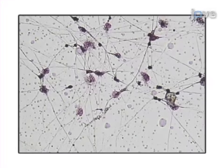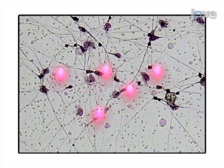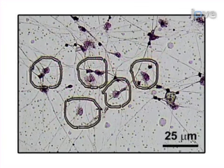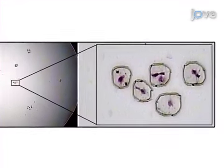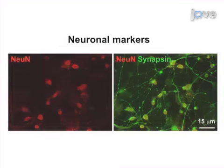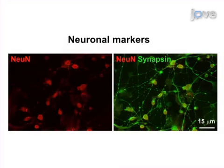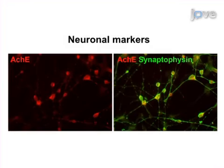Next, immunofluorescent staining for neuronal markers is performed to determine the fate of the differentiated neuro progenitor cells. Finally, laser capture microdissection of neurons cultured on PEN membrane slides is performed to facilitate neuron-specific gene expression analysis.